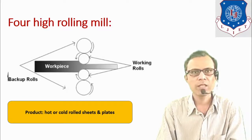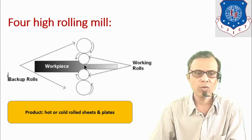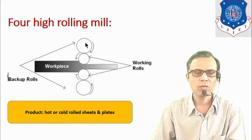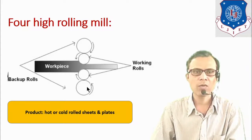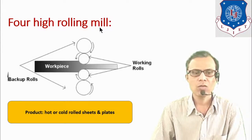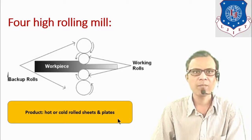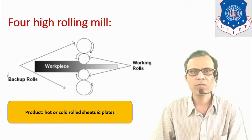The four-high rolling mill consists of four rolls. The working rolls are smaller in size and rotate in opposite directions to each other. Both working rolls are supported by larger backup rolls, which help prevent deflection of the working rolls. The workpiece is fed between the working rolls and its cross section is reduced, with hot rolled or cold rolled sheets and plates as the final product.